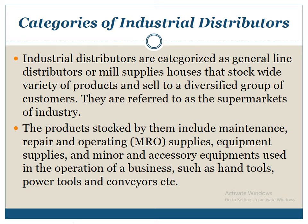The second type are specialized distributors, who specialize in products they handle for customers they serve. Because of the increase in specialized markets, their markets and numbers are increasing. Specialized distributors limit their inventories to a specific product range like bearings, office equipment and supplies, or electrical equipment and supplies. The third category is the combination house, which sells products that are both general and specialized directly to industrial customers as well as to some other retailers or dealers.